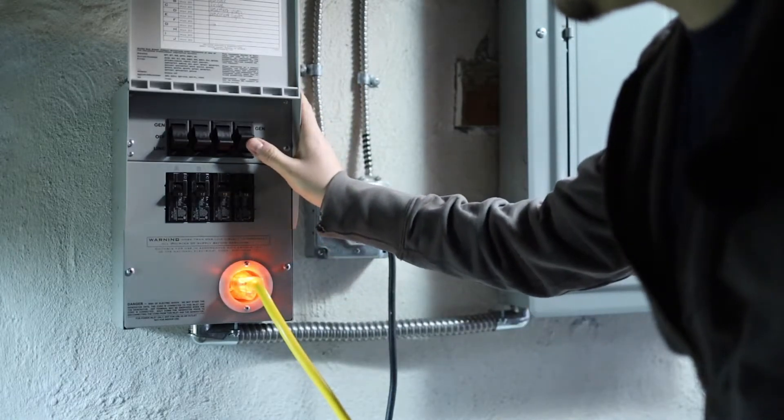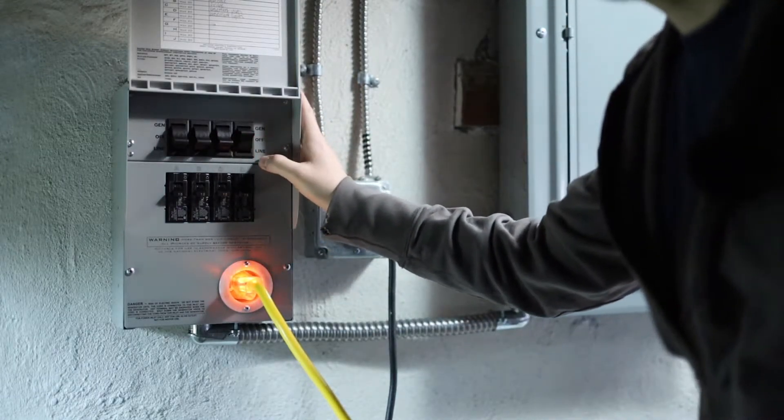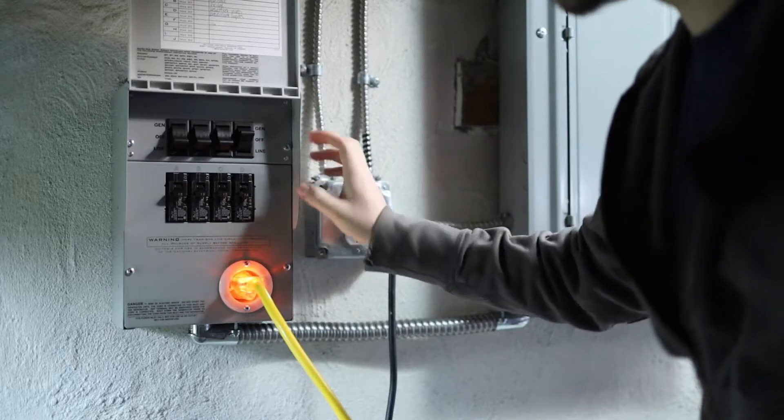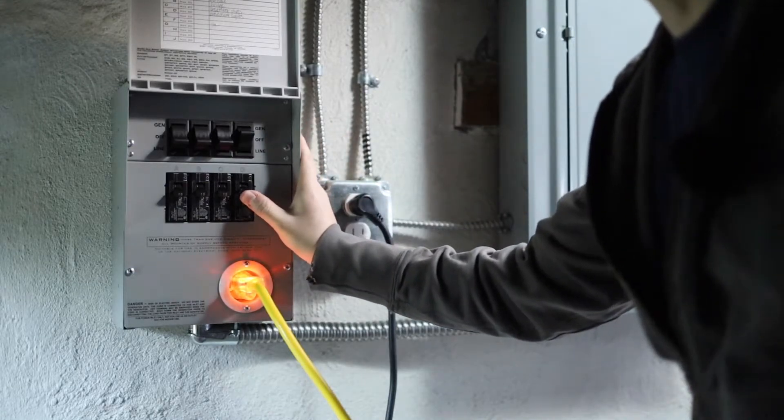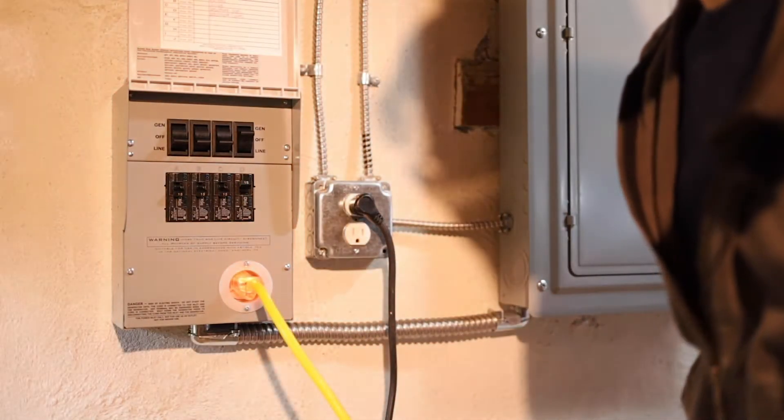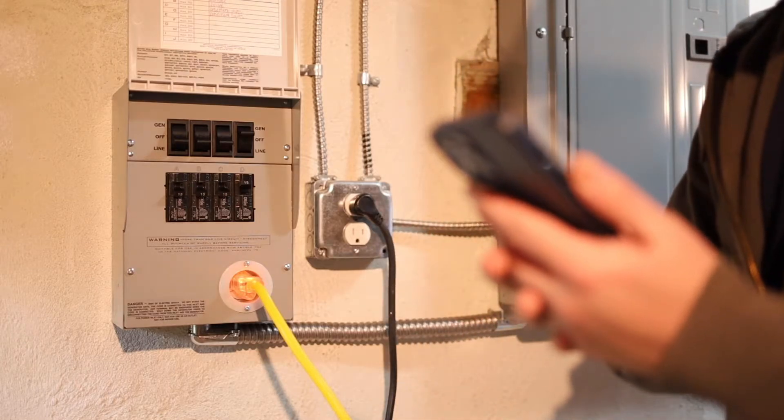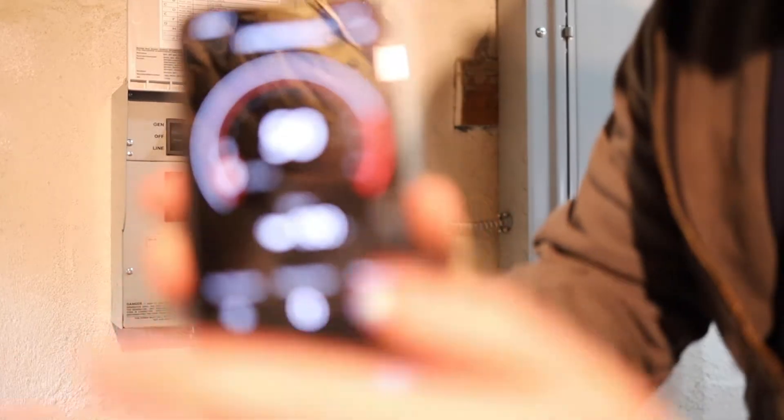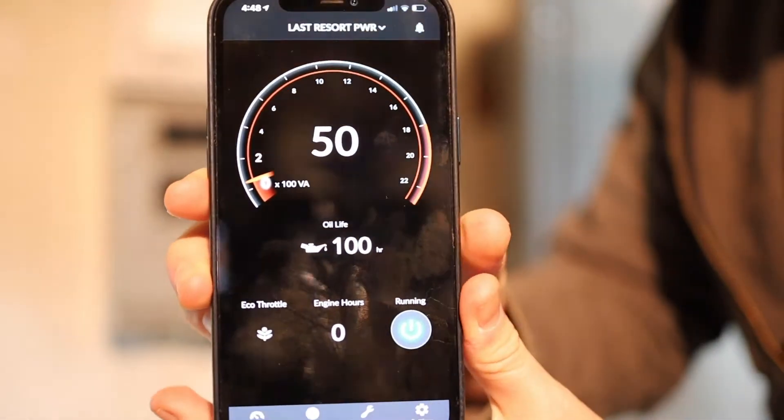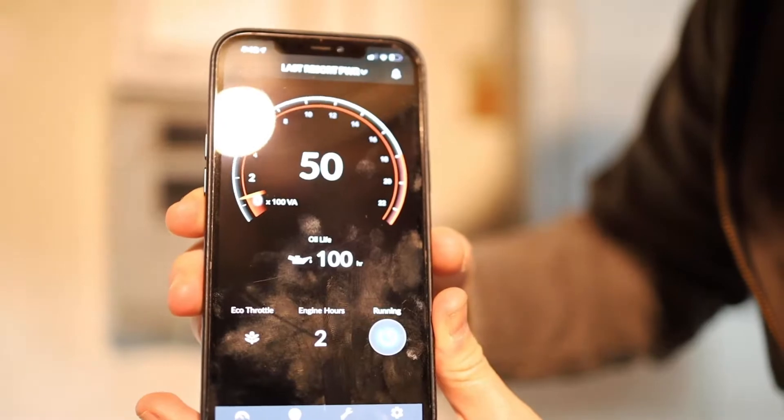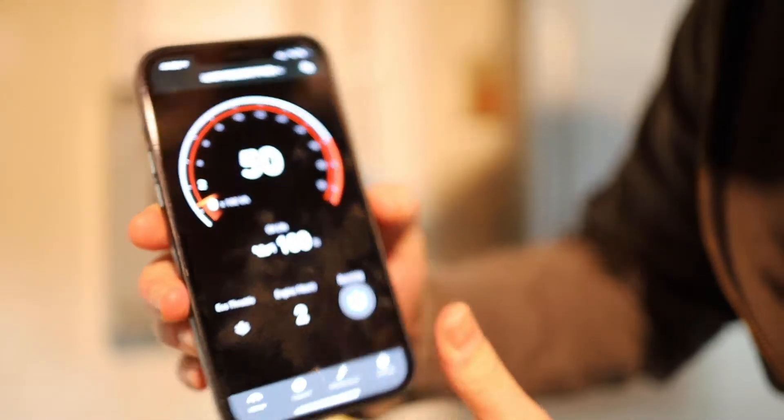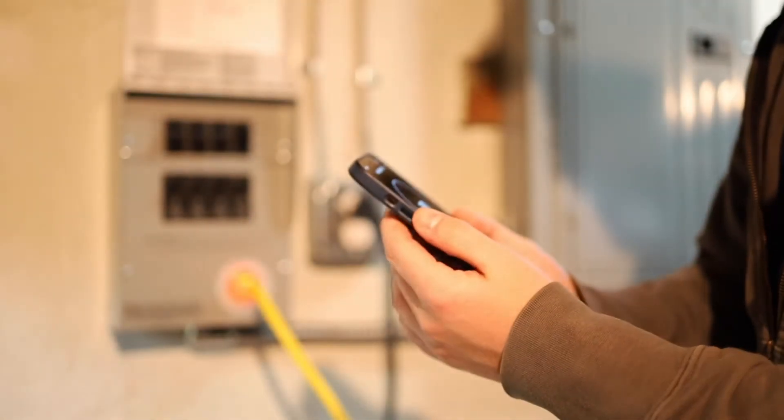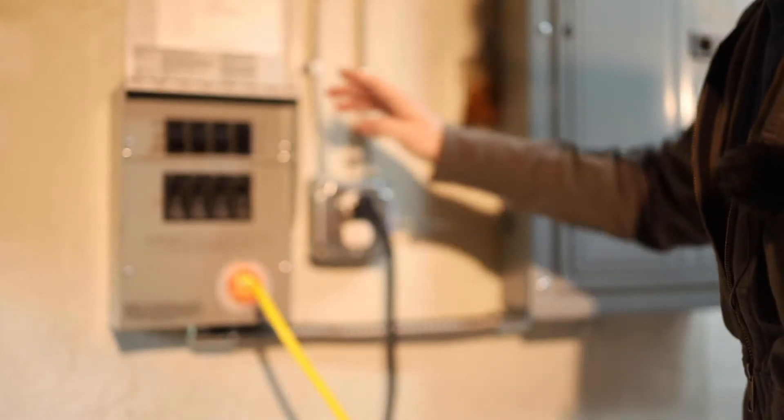And then I'm going to switch it to generator. You don't see anything because the circuit is still off. And when I put this on, you should see lights. And we got lights. It's running off the generator. We got 50 watts being drawn. All right. Let's try something else.